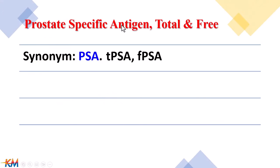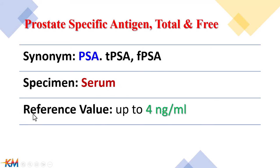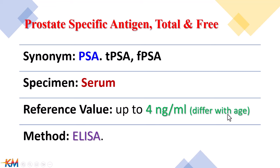Prostate Specific Antigen is abbreviated as PSA. Total Prostate Specific Antigen is recognized as TPSA and the free form is recognized as FPSA. The sample used for PSA measurement is serum. The reference value is up to 4 nanogram per milliliter, and it differs with age as shown later in this video. The method of measurement is ELISA test using ELISA kits and an ELISA reader.